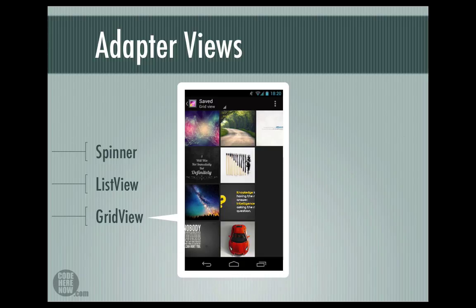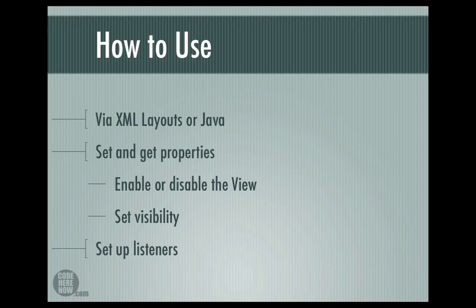So we have seen what views are and we have explored over two dozen views in Android. Now the question is how are we going to use them? You have the graphical layout editor where you can drag and drop views; you can also hand-code XML to create layouts; and you can also add views to your screen during runtime through Java. When it comes to user interface programming, most of the time we program by setting and getting properties of views — such as text, background, text color, and selected item.